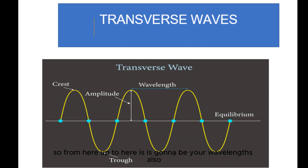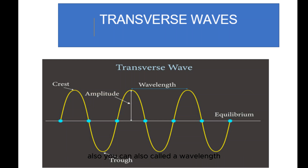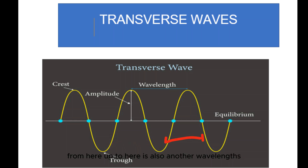From here up to here is called the wavelength. You can find different positions to measure your wavelength — from here up to here is a wavelength, and from here up to here is also a wavelength.